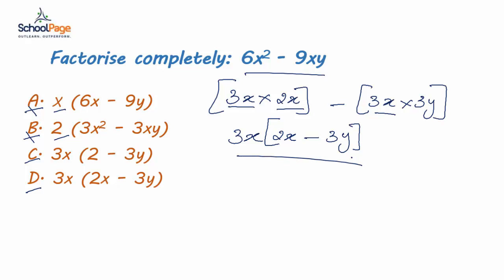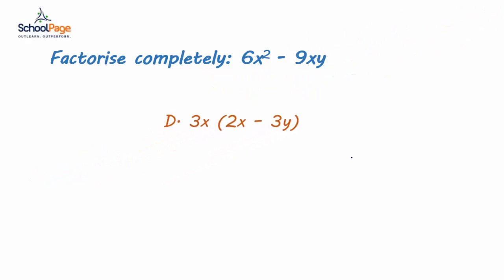Hence, the right answer is option d, 3x into 2x minus 3y.